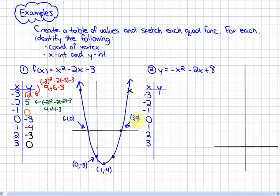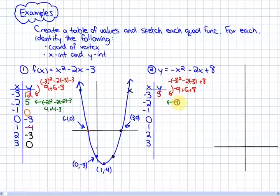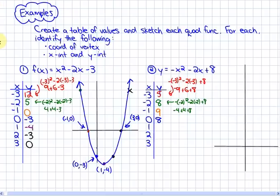On to the next function. If I use the same input values, I will get output values of: negative 9 + 6 + 8, which is 5. The next output value would be 8, then 9, then 8, then 5, and then we get output values of 0, then negative 7.